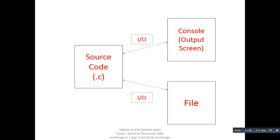We can also understand the concept of file handling with this diagram. In this diagram, there is source code which, when we execute it, is automatically linked with the console — so that we can manage some input or output. But we all know that the console is a temporary location, so whatever input or output we generate through a source code will automatically disappear. So if we want to store this input or output permanently, we can connect a file with our source code.